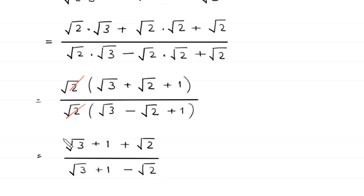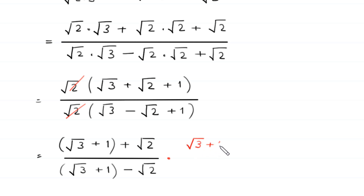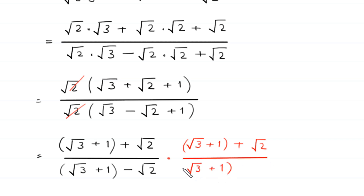Now, we make a group of square root of 3 plus 1 in the numerator, and similarly in the denominator, and we rationalize the denominator. We multiply and divide the expression by the conjugate of the denominator, changing the minus sign to plus, giving square root of 3 plus 1 plus square root of 2, divided by square root of 3 plus 1 plus square root of 2.